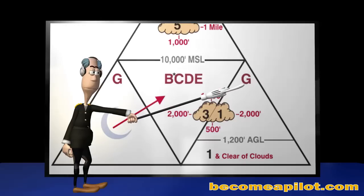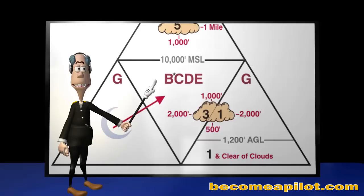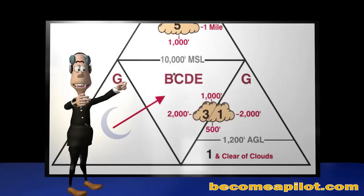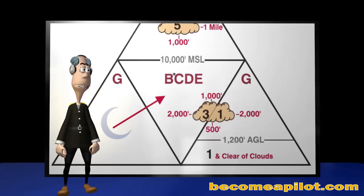And this leaves us with the bottom left pyramid. It represents Class G airspace from the surface up to, but not including, 10,000 feet MSL. The moon in this section represents nighttime. The arrow points directly to the middle pyramid. Symbolically, this tells us that in this section of Class G airspace at night, the VFR requirements are the same as they are in the middle pyramid. And by default, the bottom right triangle represents the day VFR requirements for Class G airspace.